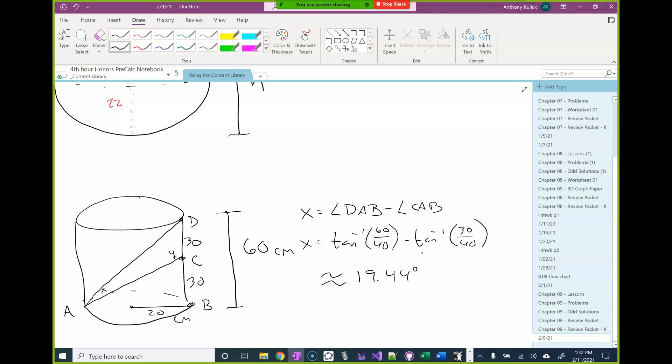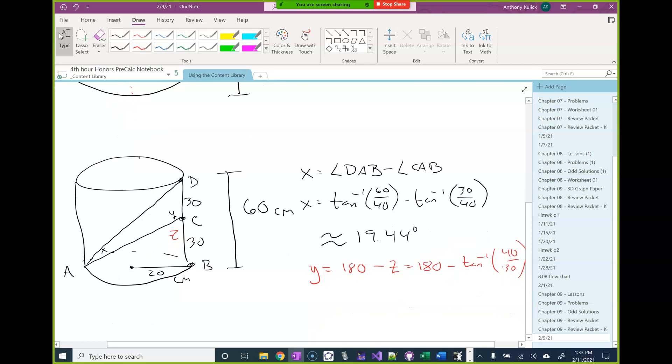So next, to calculate angle y, I could do a couple of different things. So I could calculate this angle z and do 180 minus z to get y. Or I could use the law of sines to calculate that angle y. I think it's probably easier to just define the angle z, and then do 180 minus z. Since we have everything else there. So z, again, opposite is 40 and adjacent is 30. So I can do that. And that should give me my value for y.